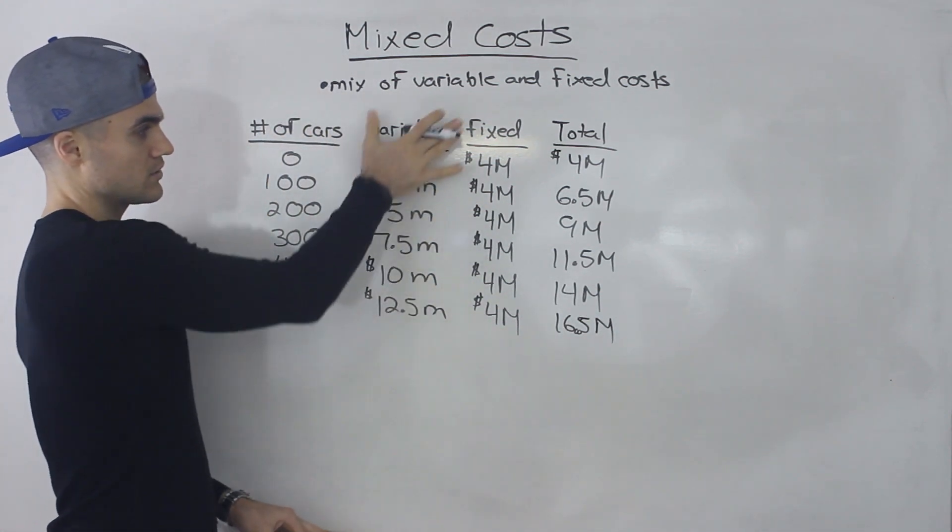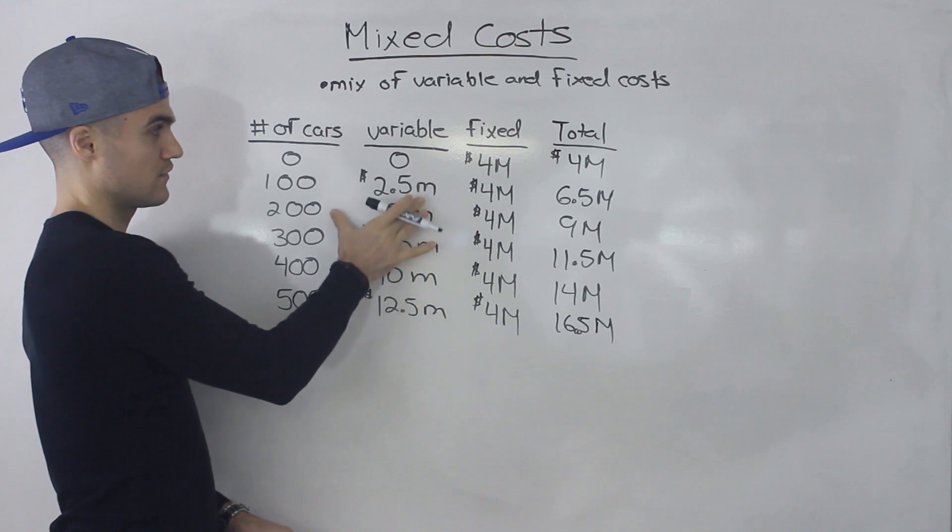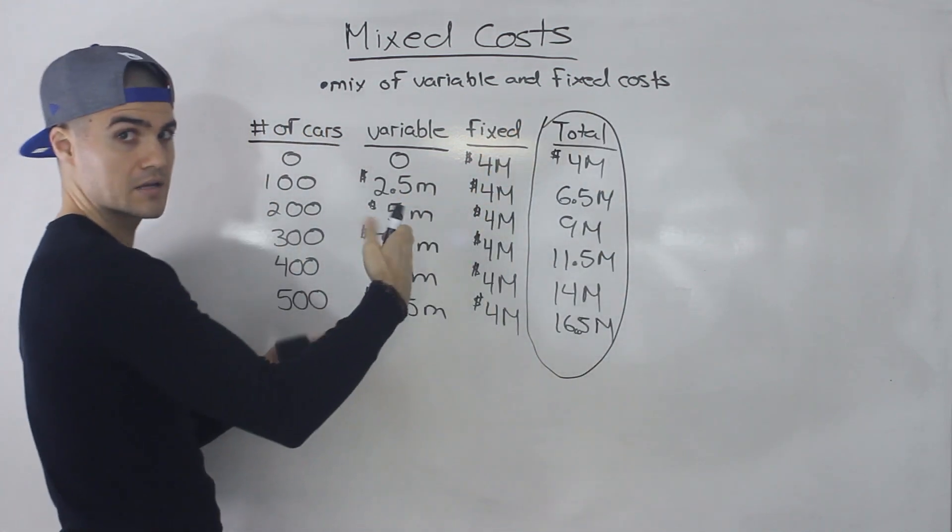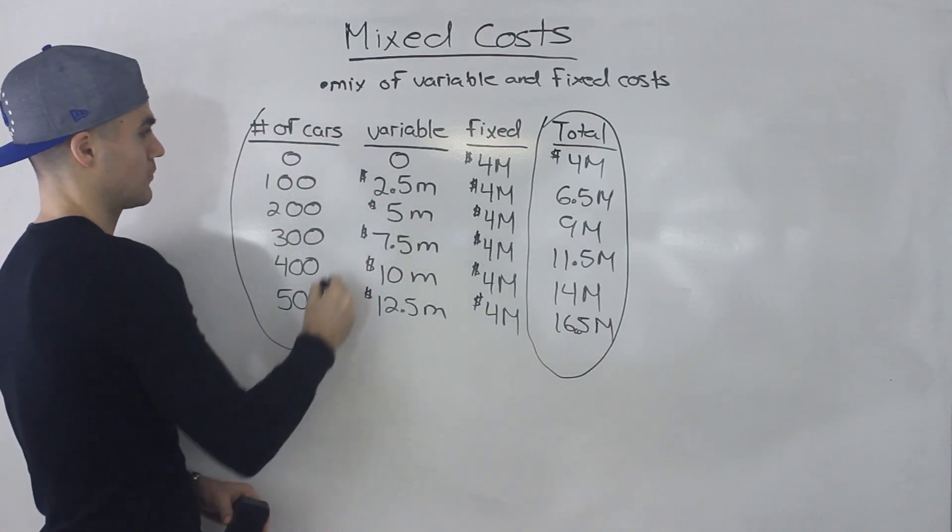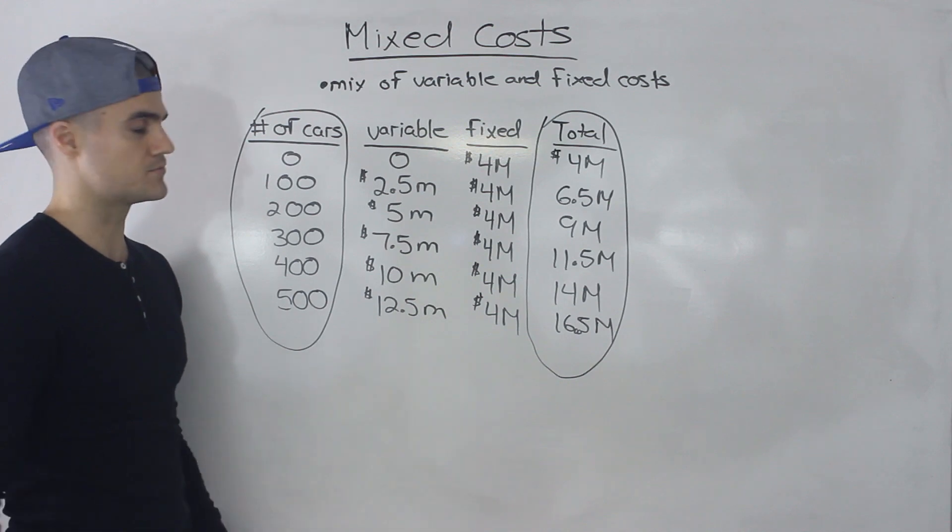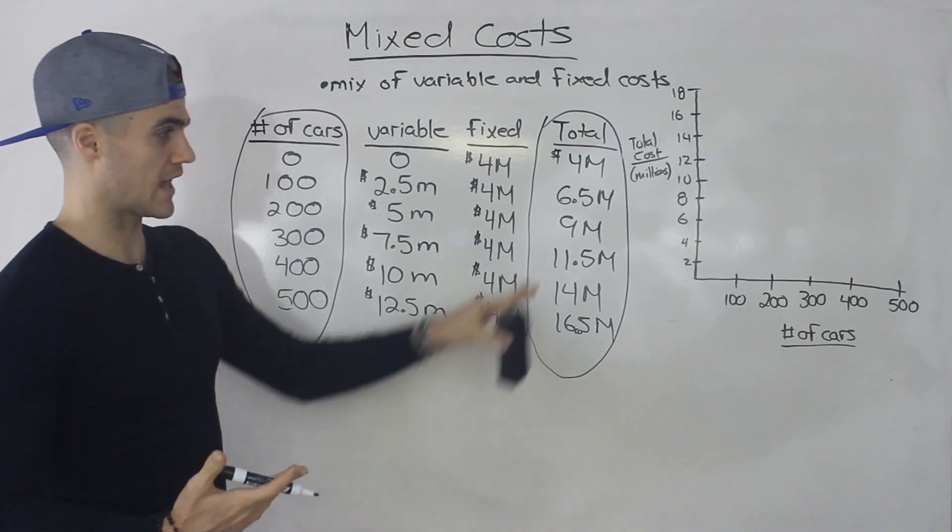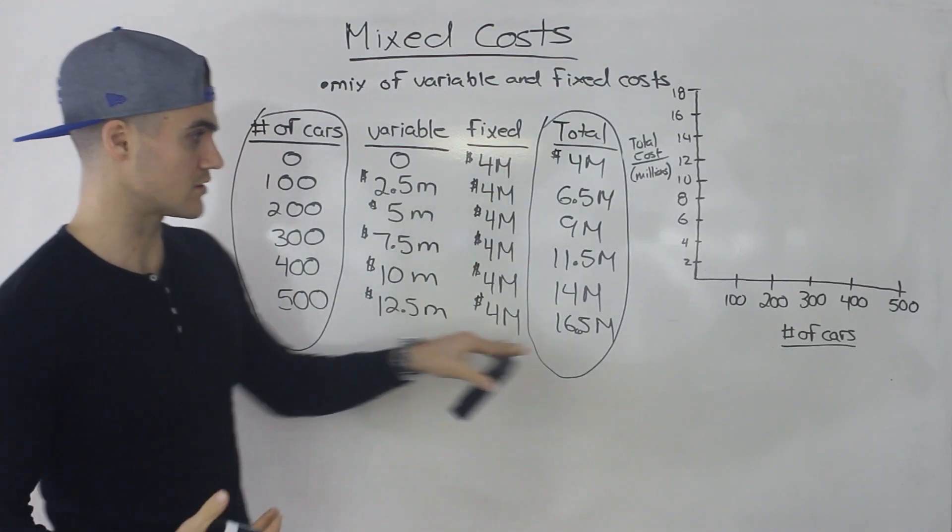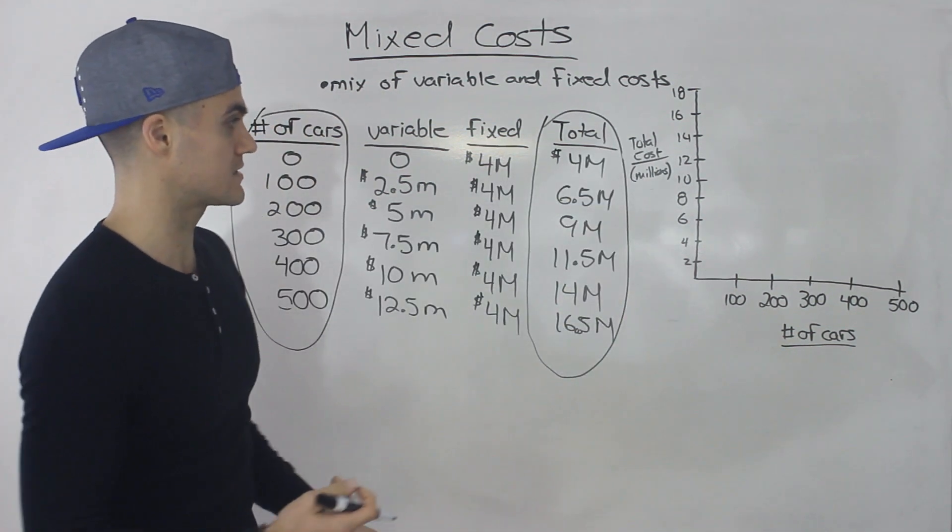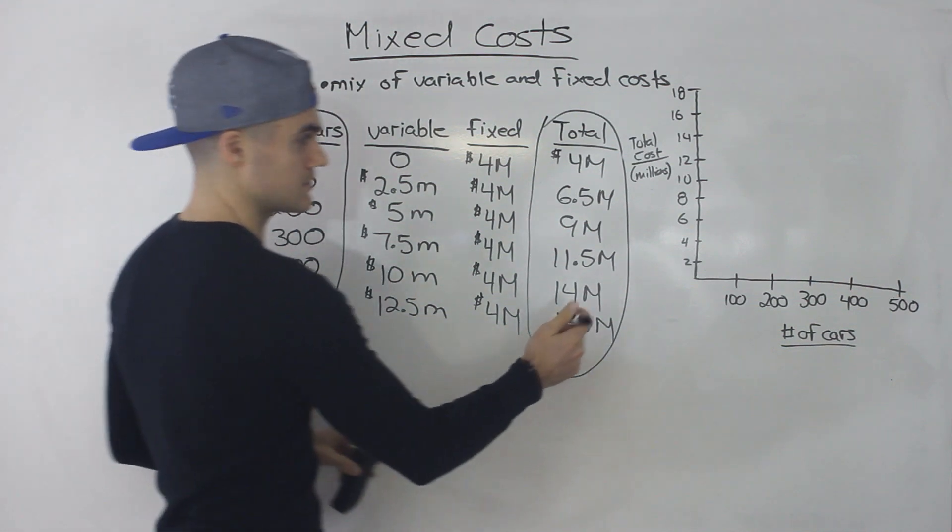And so we're sort of going to be ignoring these columns here, the variable and fixed columns. And we're going to be focusing on this column now. We're mixing both costs together. And we're going to obviously be focusing on the output column too. So if I take both of those columns and I graph them out, the number of cars is going to go on the x-axis as before, and then the total cost is going to be on the y-axis.